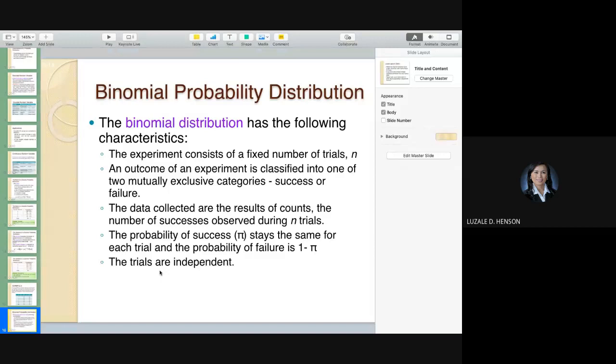The trials are independent. So that's binomial. You have to be able to identify when to use binomial in a given situation. The outcome has only two possibilities. The probability of success stays the same for each trial, and the probability of failure is 1 minus pi.